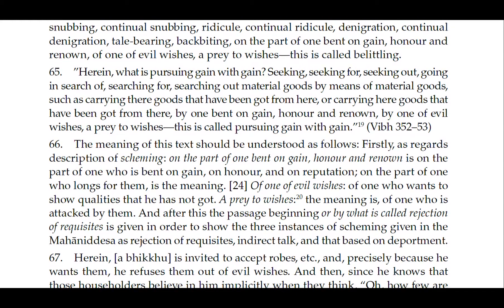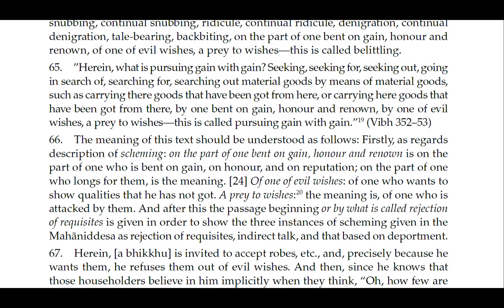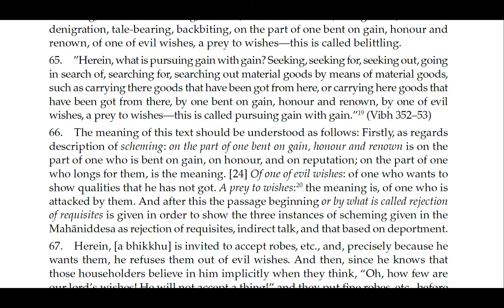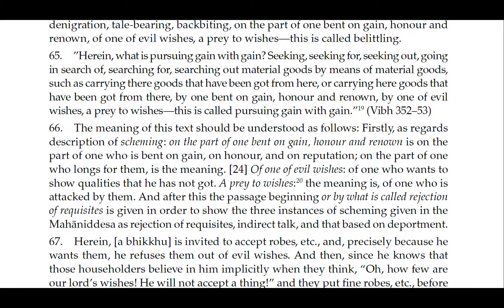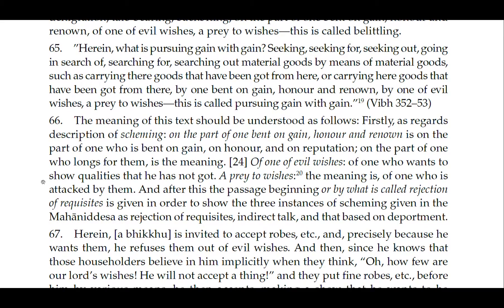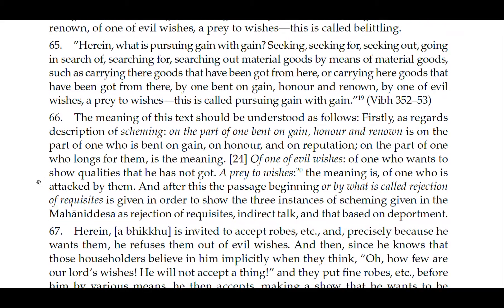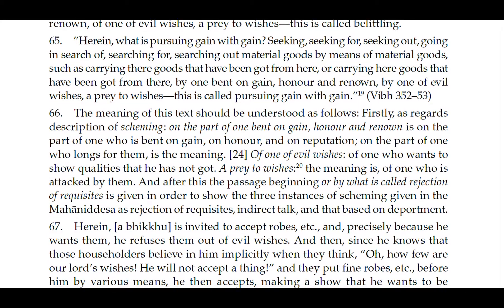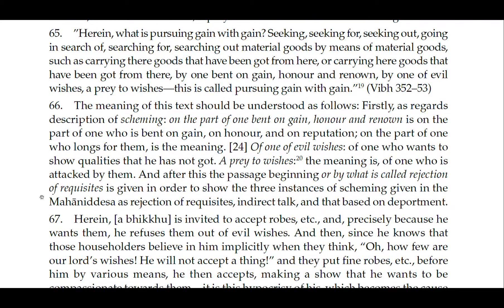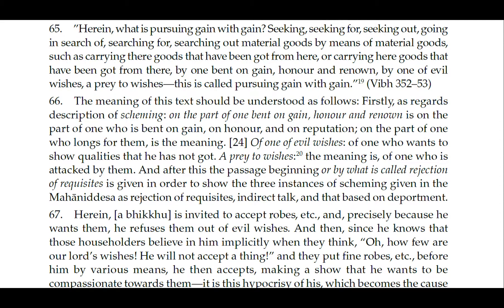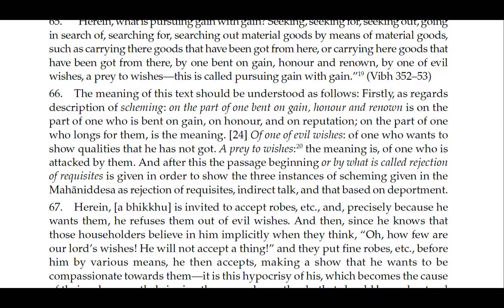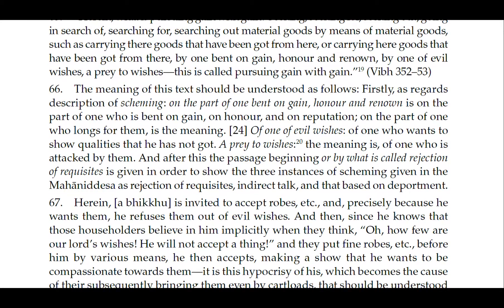66. The meaning of this text should be understood as follows. Firstly, as regards the description of scheming: 'on the part of one bent on gain, honor, and renown' means on the part of one who is bent on gain, on honor, and on reputation — of one who longs for them. 'Of one of evil wishes' means of one who wants to show qualities that he has not got. 'A prey to wishes' means of one who is attacked by them. After this, the passage beginning 'or by what is called rejection of requisites' is given in order to show the three instances of scheming given in the Mahaniddesa: rejection of requisites, indirect talk, and that based on deportment.